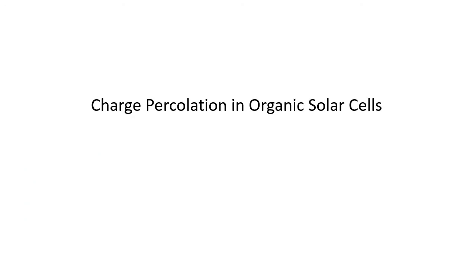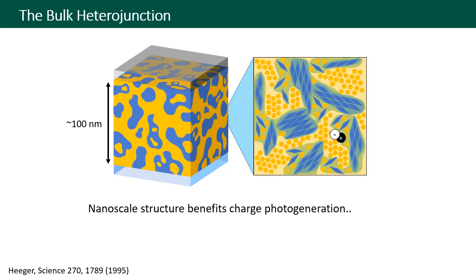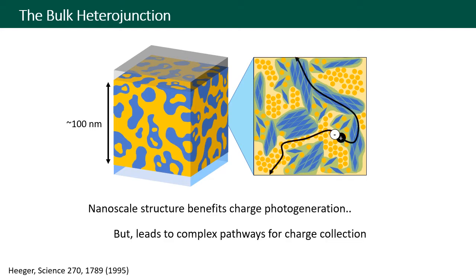I'll start with charge percolation in organic solar cells. Organic solar cells rely on a nanostructured so-called bulk heterojunction morphology for efficient charge photo-generation. In the bulk heterojunction there's an interpenetrating network of electron-donating and electron-accepting domains, which leads to complex pathways for charge transport. The electrons need to find their way through the electron-accepting phase and holes move through the electron-donating phase.